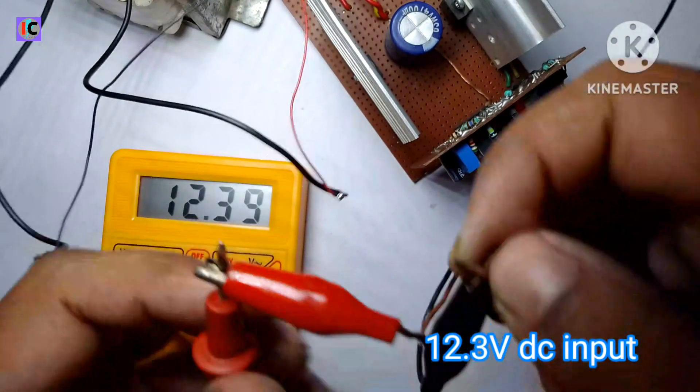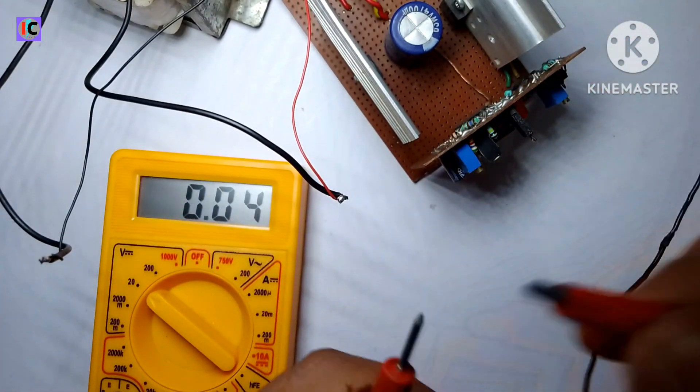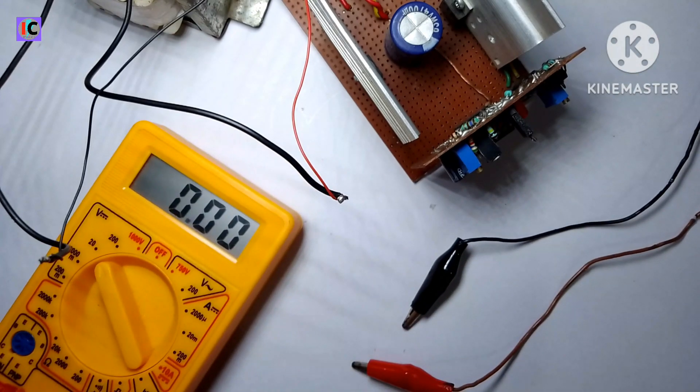Here we have, it's 12.4V DC input to power this inverter circuit.